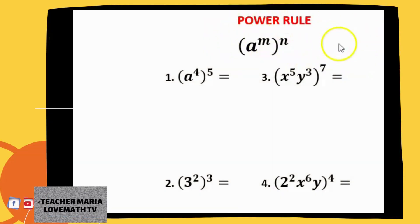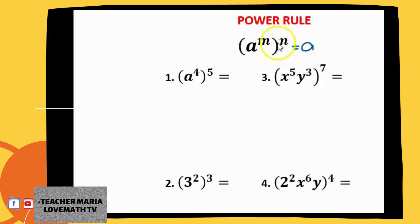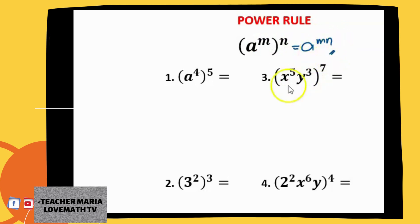Let's talk about the third law of exponents, which is the power rule. The power rule states that we can simplify a power of a power by multiplying the exponents and leaving the base. If we have a raised to m, raised to n, applying the rule, we leave the base a and multiply the exponents, so we have a raised to m times n.